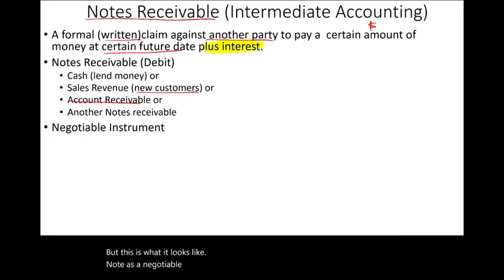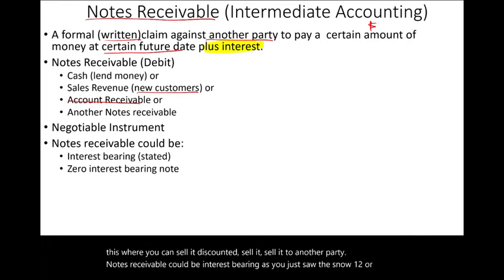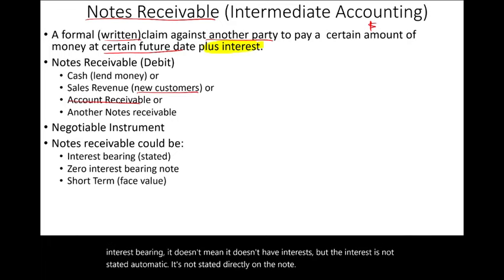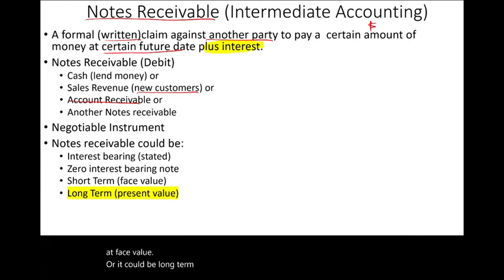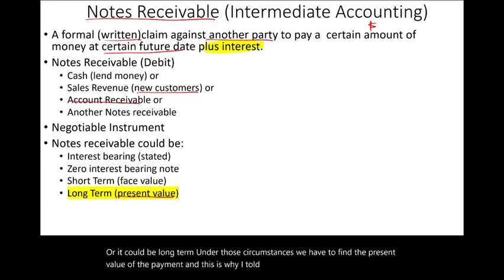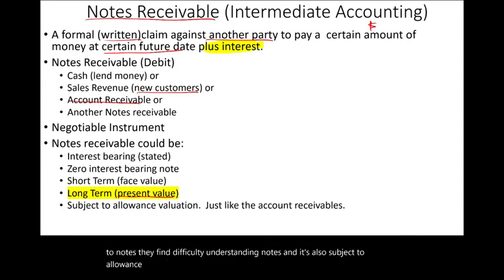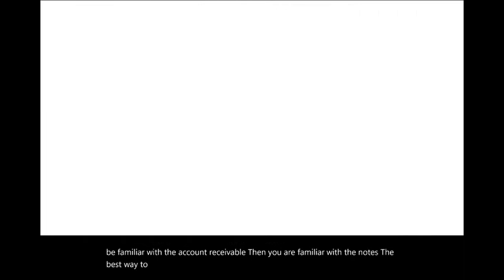A note is a negotiable instrument — you can sell or discount it to another party. Notes receivable can be interest-bearing, where the rate is stated on the note, or zero-interest-bearing, where interest is not directly stated but still exists implicitly. Notes receivable can also be short-term, in which case we report them at face value, or long-term, in which case we must find the present value of the payments. They are also subject to allowance valuation, just like accounts receivable.